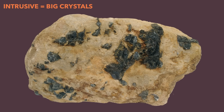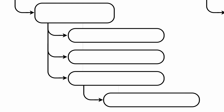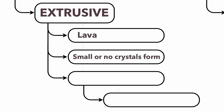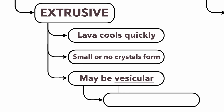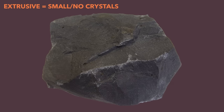Now what about the second type? These are called extrusive igneous rocks. Instead of forming deep underground and cooling slowly from magma, these form on the surface. Because they cool really quickly from lava, you're going to get small or no crystals at all. As a result, they may even have air bubbles trapped inside, which is something we call vesicular. This is a rock called basalt, and you'll notice you can't really see any crystals at all — if you look with a magnifying glass, you would find really tiny ones smaller than a millimeter. That's a sign of an extrusive rock.